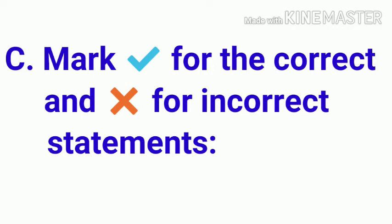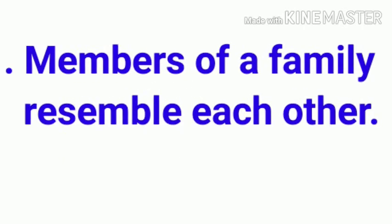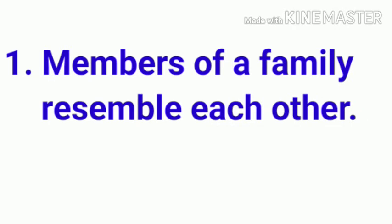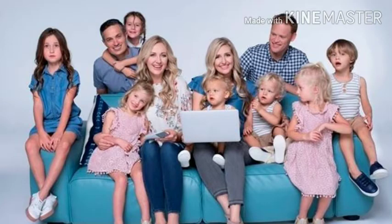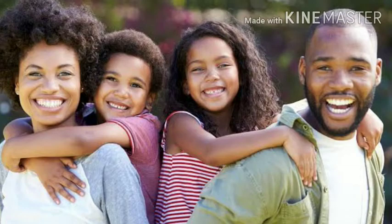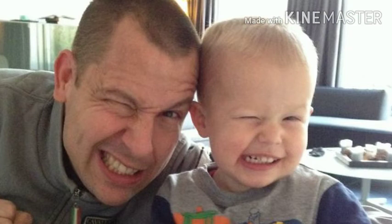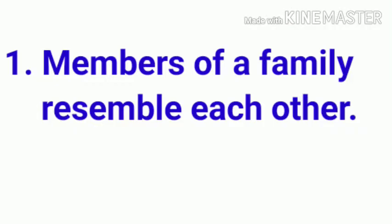and cross for the incorrect statement. Our first statement is: members of a family resemble each other. In this lesson we have learnt that children look like one of their parents or both of their parents. Brothers and sisters may also have similarities. So we can say this statement is the correct one, so let's mark it right.